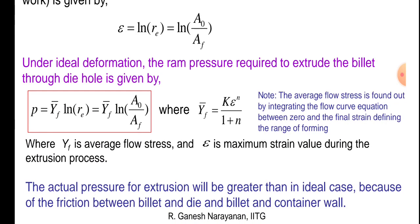These are the cross sectional area of billet and extruded part, final extruded part, A0 and Af, where Y̅f equals K epsilon to the n upon 1 plus n.